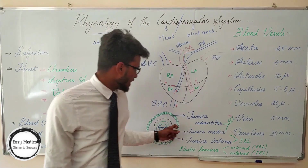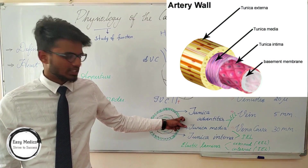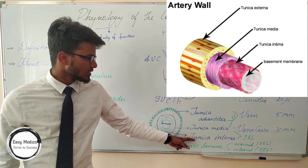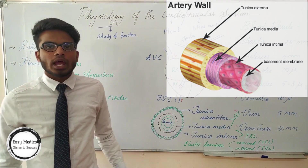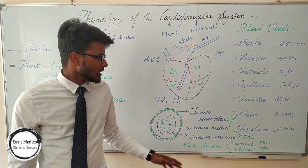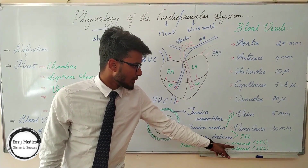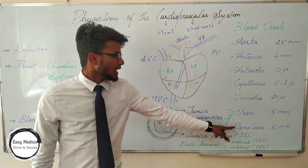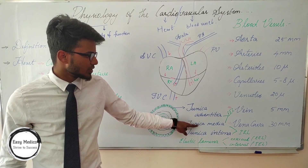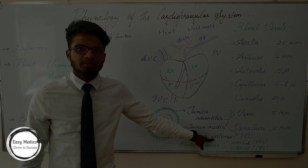The layers of the blood vessels: the tunica adventitia is the outermost layer, the middle layer is the tunica media, and the innermost layer is the tunica intima. There are two elastic laminae in the blood vessels, most abundantly found in the aorta: the external elastic lamina, located between the tunica adventitia and the tunica media, and the internal elastic lamina, located between the tunica media and the tunica intima.